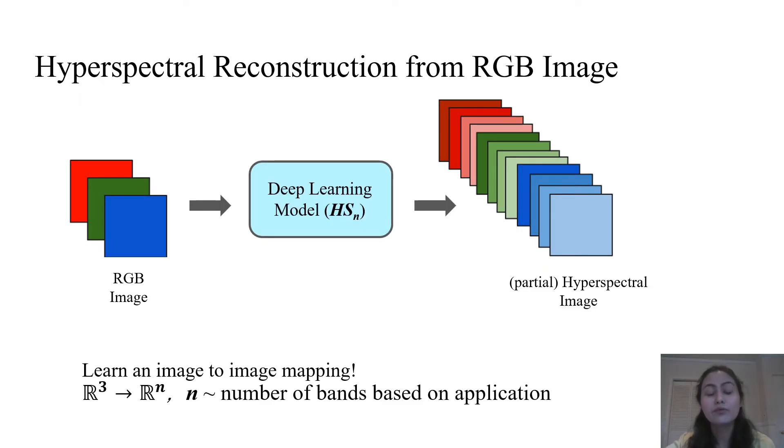We propose a deep learning based approach to convert RGB image sequences taken by regular cameras to partial hyperspectral images which can be used in many applications. This can enable low-cost mobile phones to leverage the characteristics of hyperspectral images in implementing novel applications.